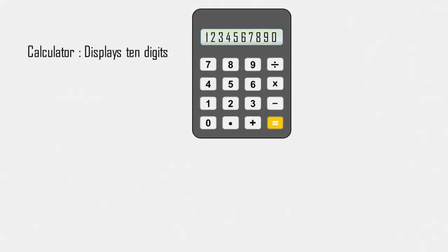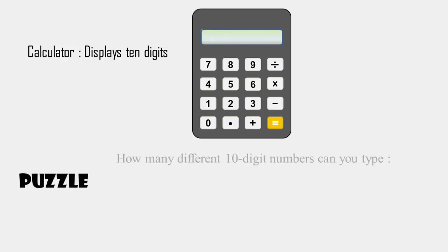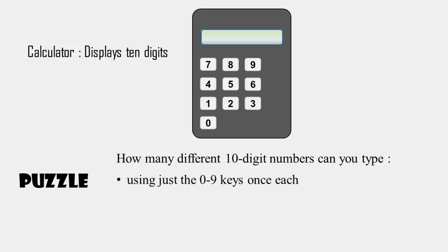You have this calculator that can display 10 digits. How many different 10-digit numbers can you type using just the 0 to 9 keys once each and moving from one keypress to the next using the knight's move in chess?